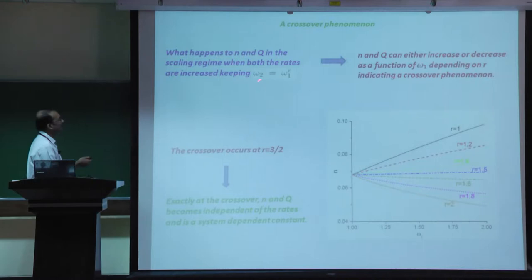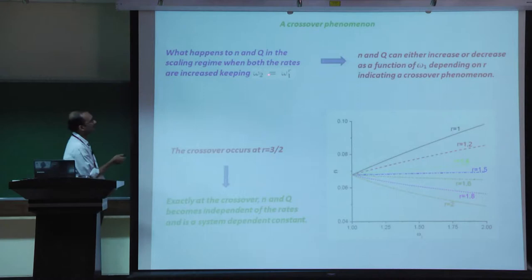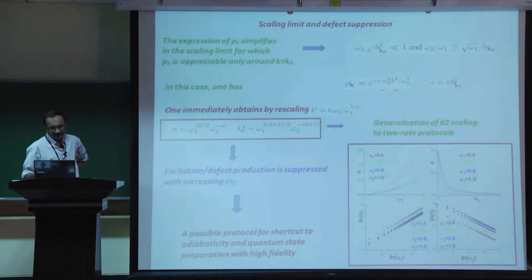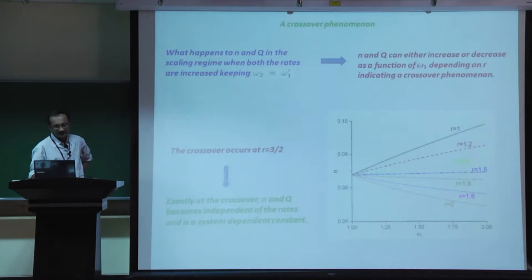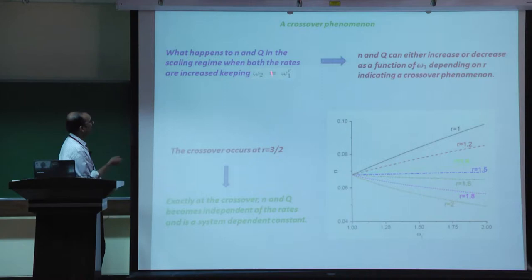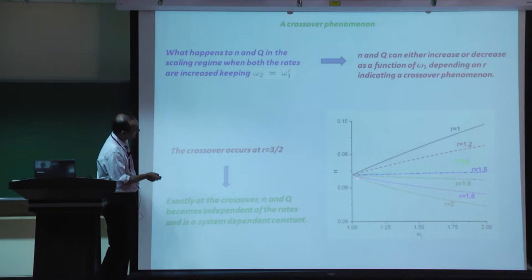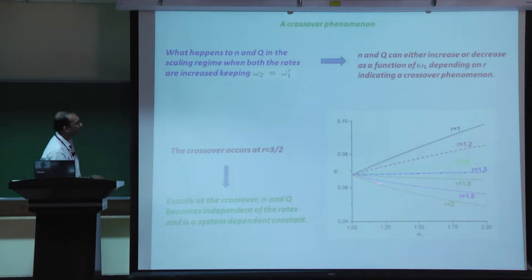There is also an interesting crossover. Looking at what happens to n when both rates are increased keeping a fixed ratio - setting omega_2 = omega_1^r - since the two scale with different powers there is a crossover regime. If r > 3/2, omega_2 wins and there is defect suppression as a function of omega. If r < 3/2, omega_1 wins and there is defect increase. Exactly at r = 3/2 the excitation production becomes independent of both drive rates.